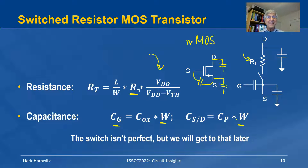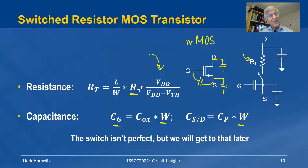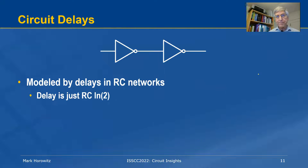One last thing we'll come back to at the end: the switch here is not perfect. That is, when it disconnects, its resistance is not infinite — we'll get to that in a little bit.